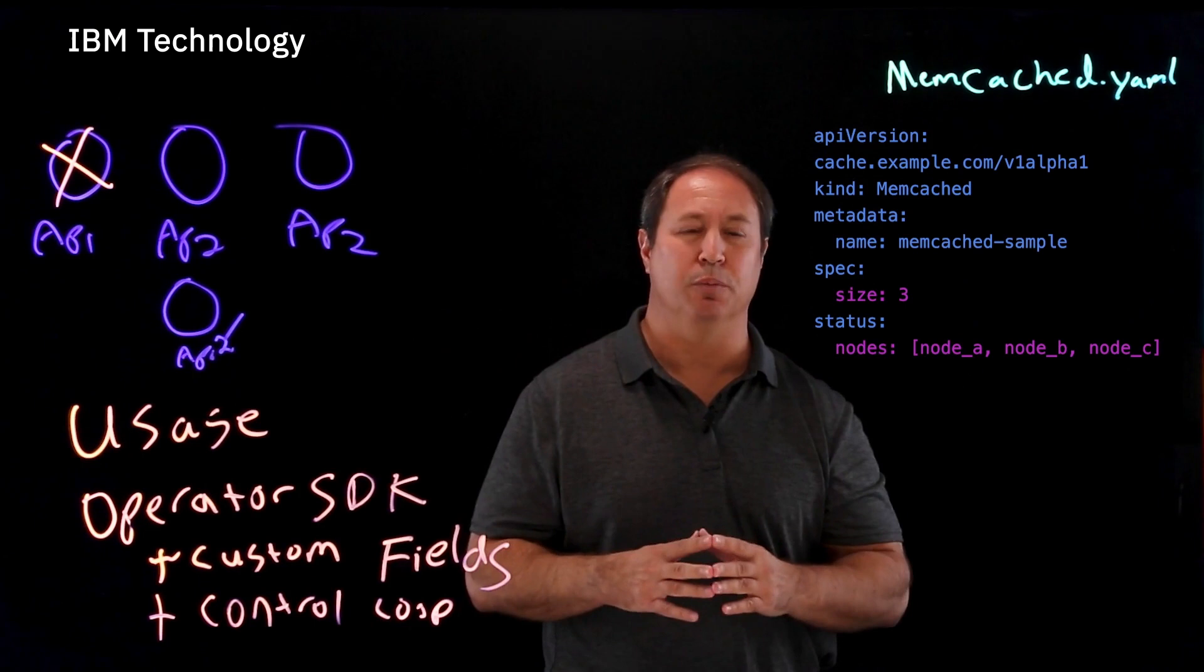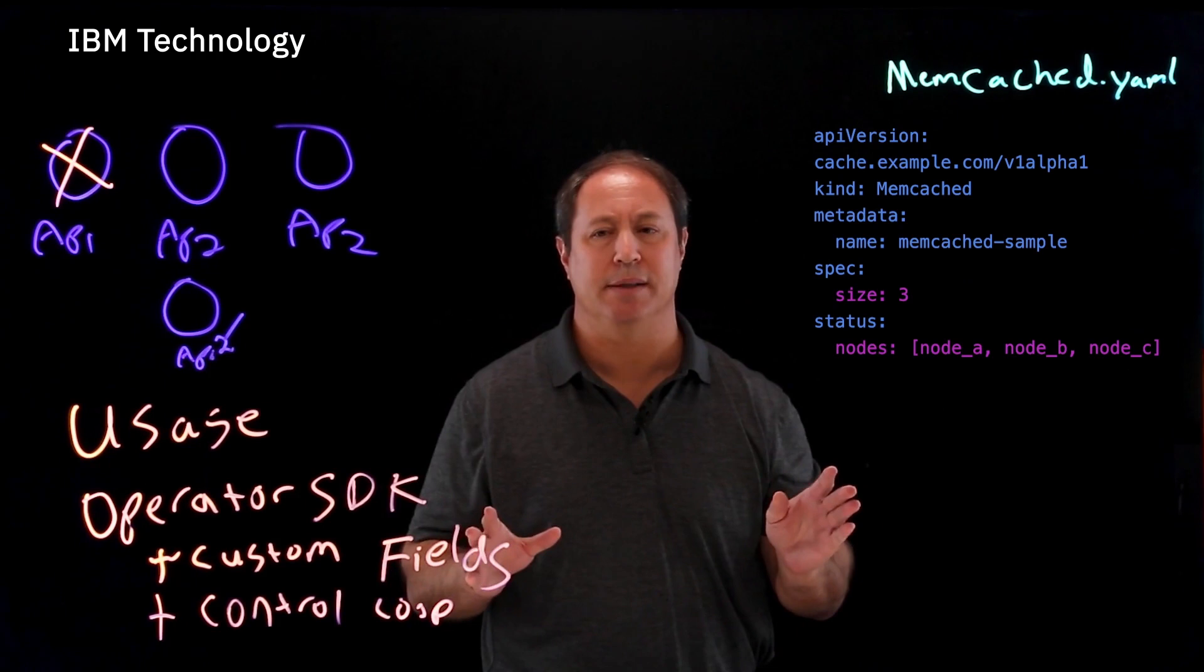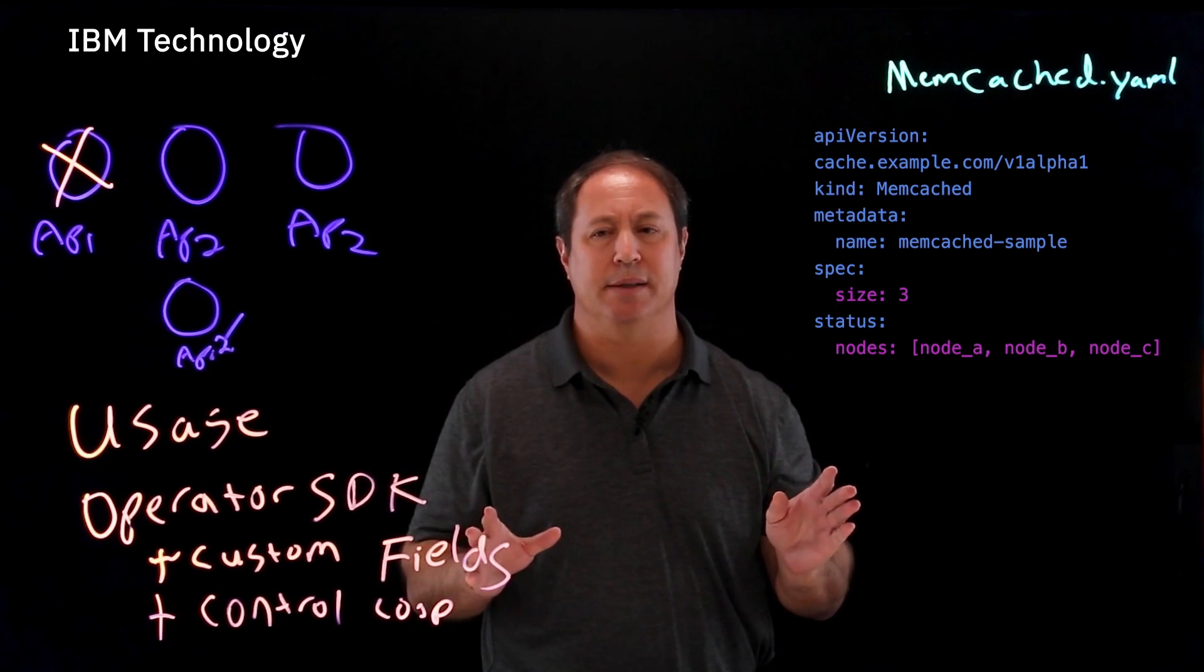Whatever needs to be done is going to be done in what's called the control loop. Now the beauty of control loops, these are used all over Kubernetes, and they all work the same way.